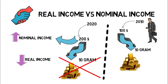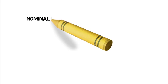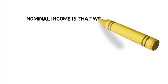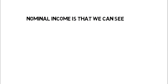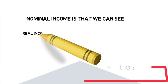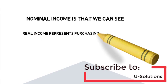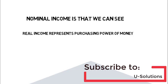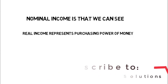Now we have understood the concept of real income and nominal income. Now we shall move to the definition of nominal and real income. Nominal income is that income we can see. And the real income represents the purchasing power of money. Whatever money can purchase is the real income.